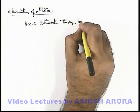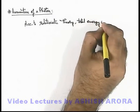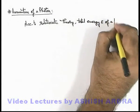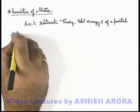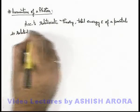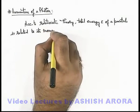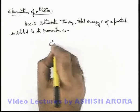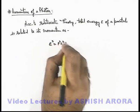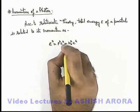We can say that total energy E of a particle is related to its momentum as E² = p²c² + m₀²c⁴, where m₀ is the rest mass of the particle.